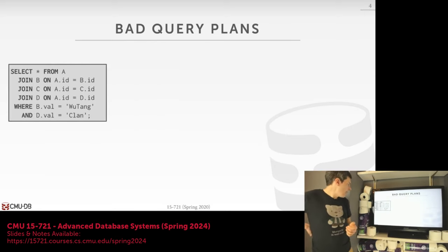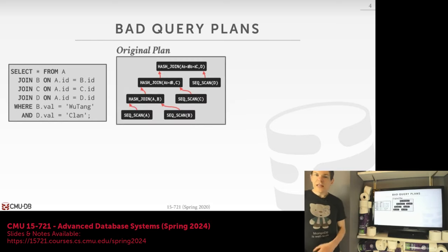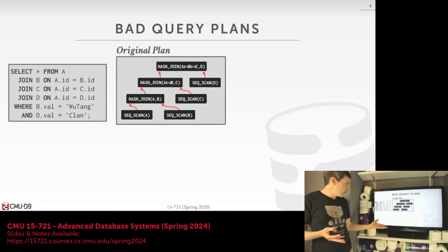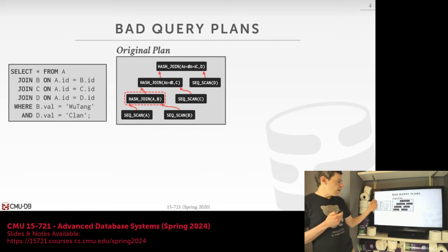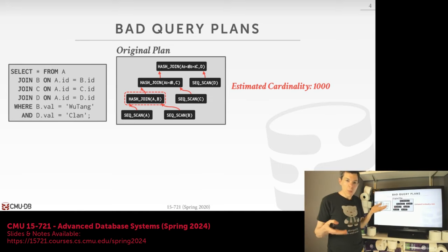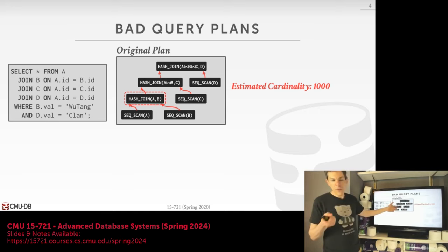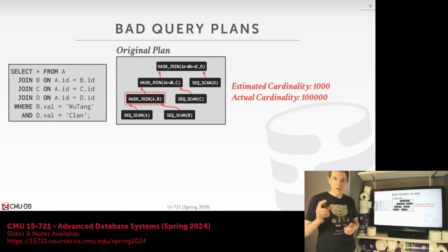For example, say we have a simple query — a four-way join between tables A, B, C, and D with a simple WHERE clause on the B and D tables. Say we run this through our query optimizer and generate a plan: a bunch of hash joins and sequential scans. For this particular join, we estimated the cardinality to be 1,000 — the number of tuples this operator will emit. But when we actually start to run it, we see we're generating 100,000 tuples. Our actual cardinality is two orders of magnitude greater than the estimated one.